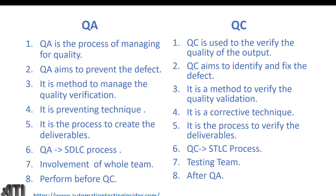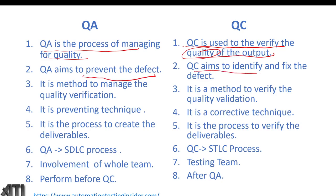QA is the process of managing quality; QC is used to verify the quality of the product. QA aims to prevent defects; QC aims to identify and fix defects. In testing, we raise defects and get them fixed by the development team. QA is a method to manage quality through verification; QC is a method to verify quality through validation.